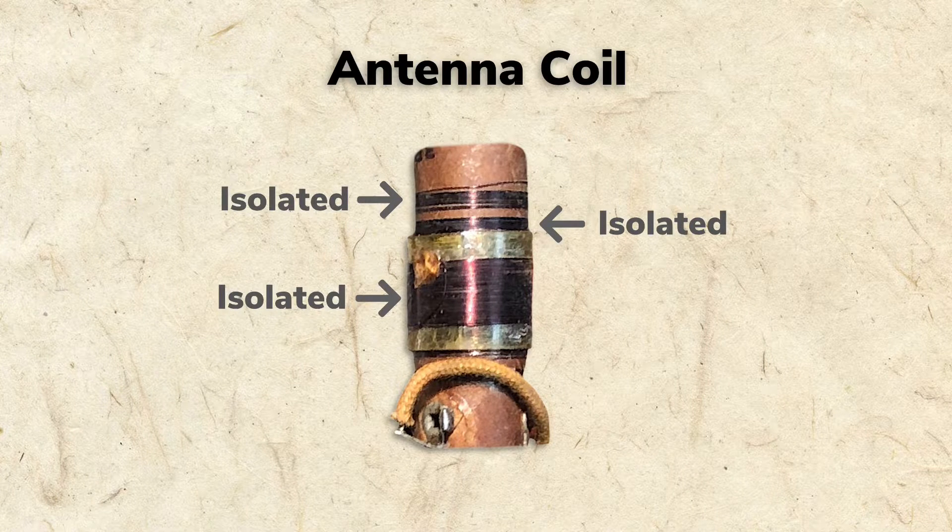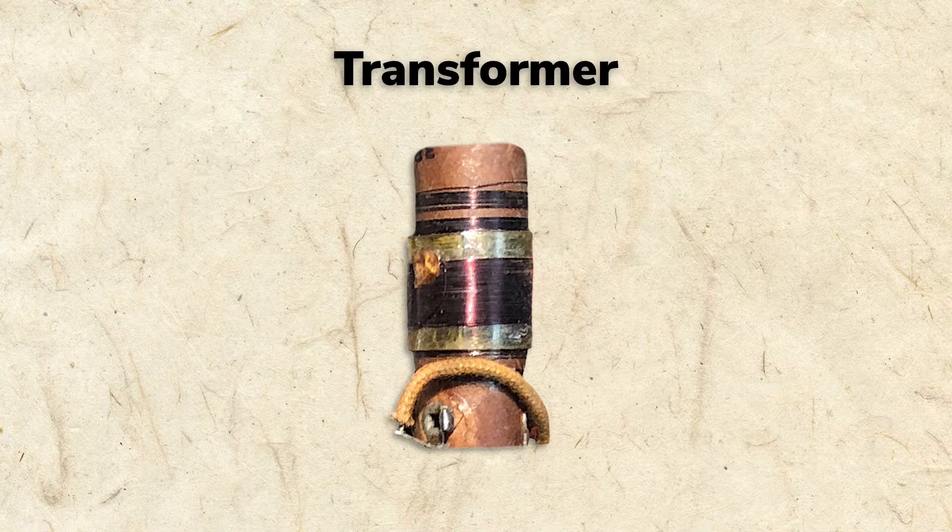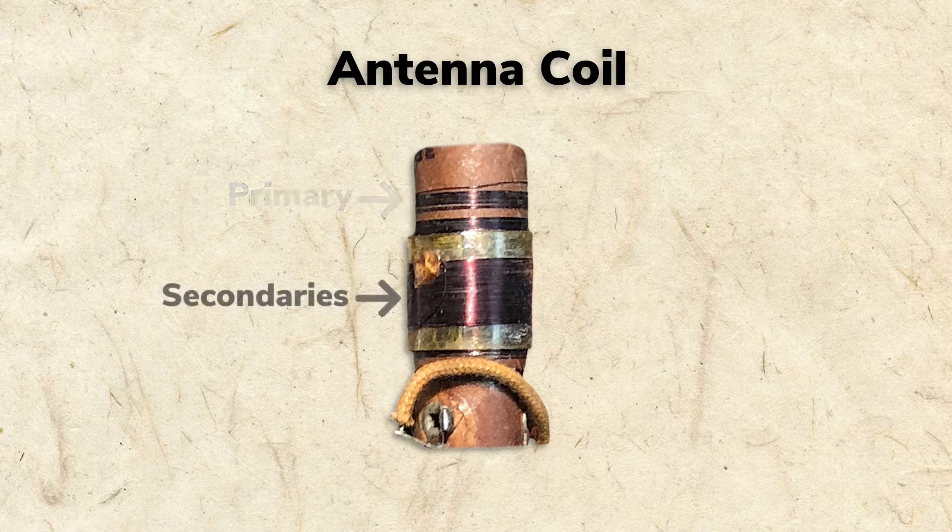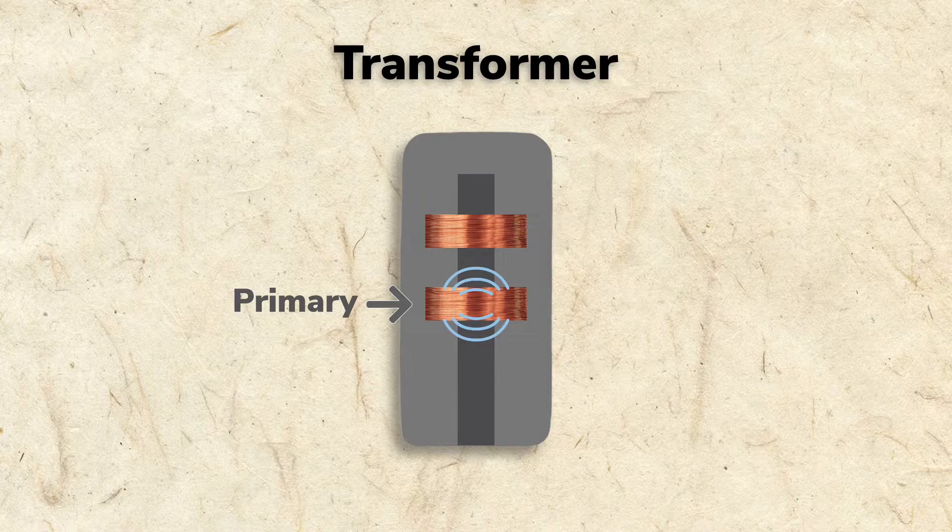When coils are arranged this way, the circuit is called a transformer. The coil which receives the input signal in a transformer is called the primary. The adjacent coils are called secondaries. When current flows through the primary, it creates a magnetic field.